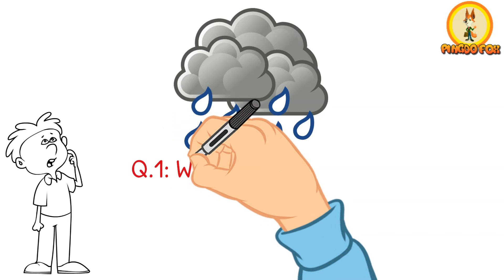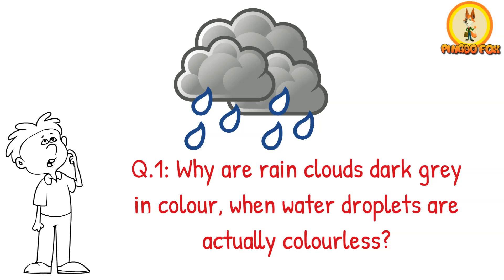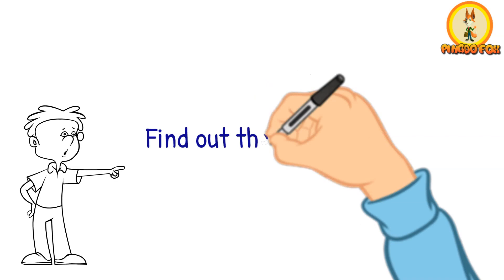Why are rain clouds dark gray in color when water droplets are actually colorless? Find out the answer during the course of this video.